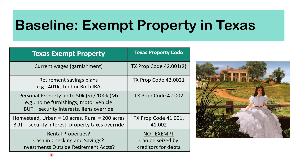But there's always an exception. Are rental properties protected from seizure by default under the Texas Property Code? No. Cash in your checking or savings accounts? No. Investments outside of retirement accounts — like a normal brokerage account with ExxonMobil or Apple shares — are also subject to seizure. So those are the assets we want to protect, and tonight we're talking about rental properties.